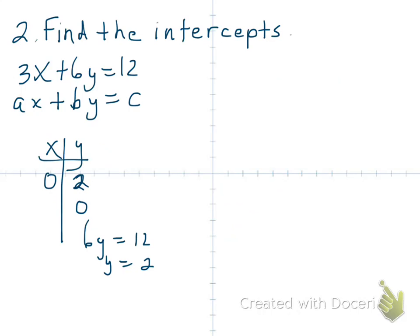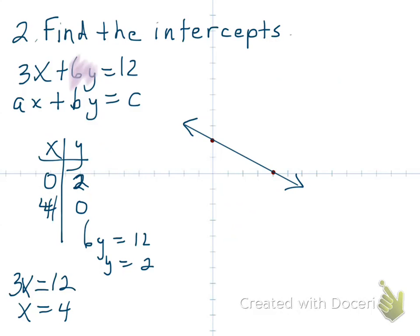Now let y be 0. That means this part zeros out — 6 times 0 is 0. We're left with 3x equals 12, and solving that we get x equals 4. So (4, 0) is your x-intercept. Let's put those in: (4, 0) and (0, 2). We draw the line through there and we've got our line.